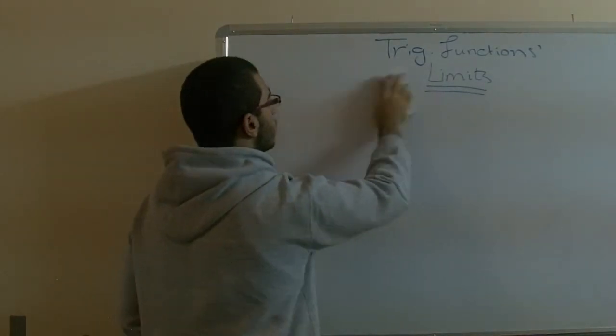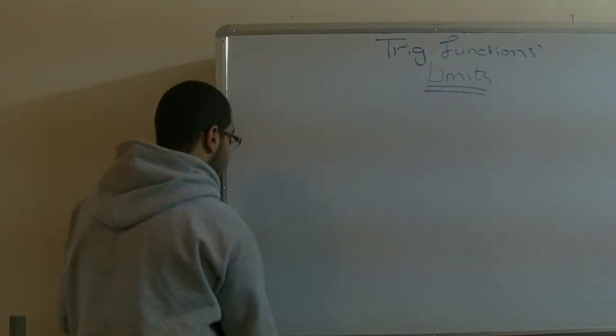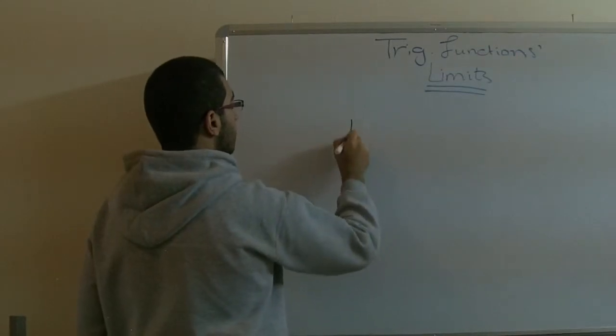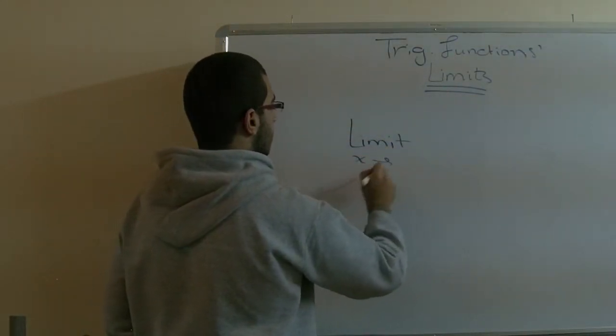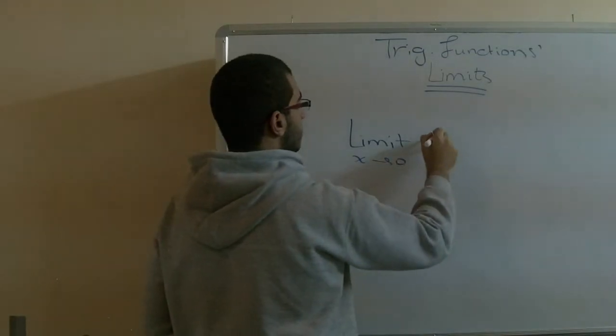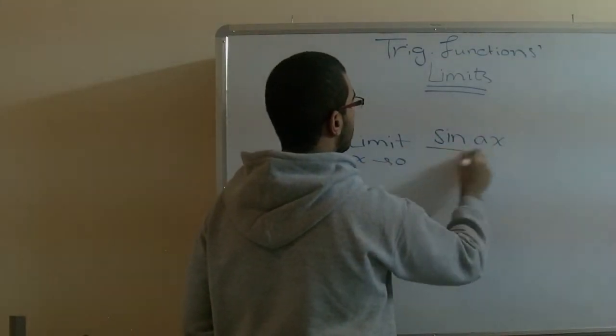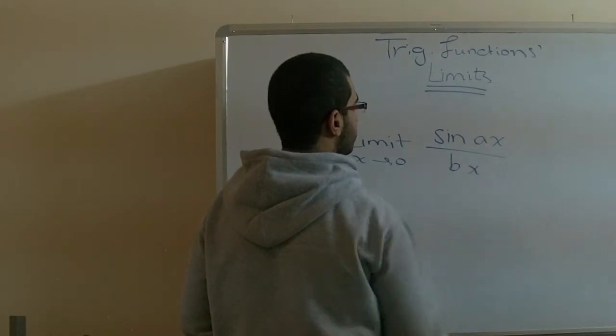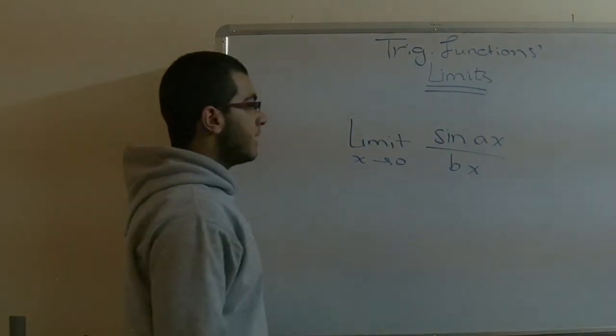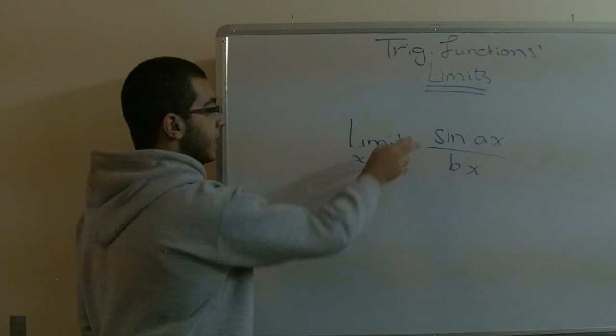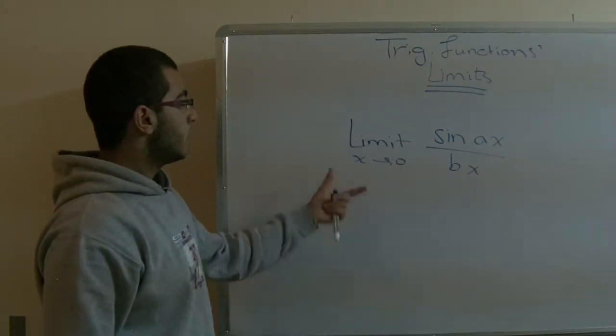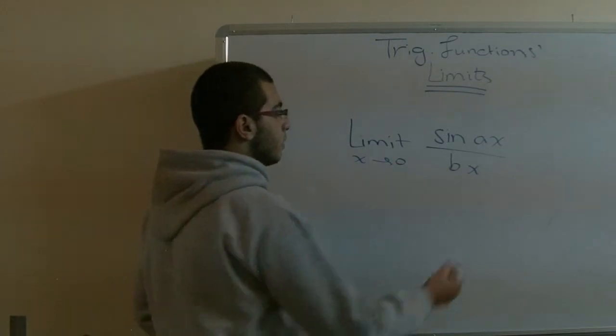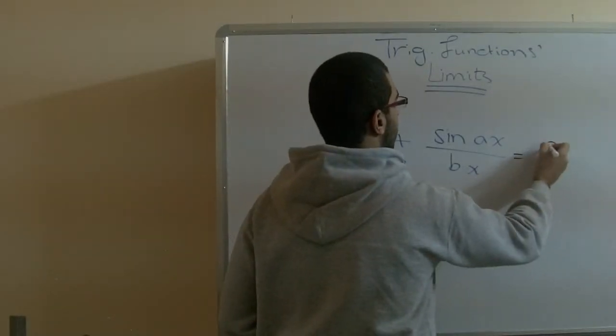And of course, here's a hint: if you have the limit of x approaching zero, sine ax over bx—we said just before that sine x over x gives us 1—so the result of this expression will be a over b.